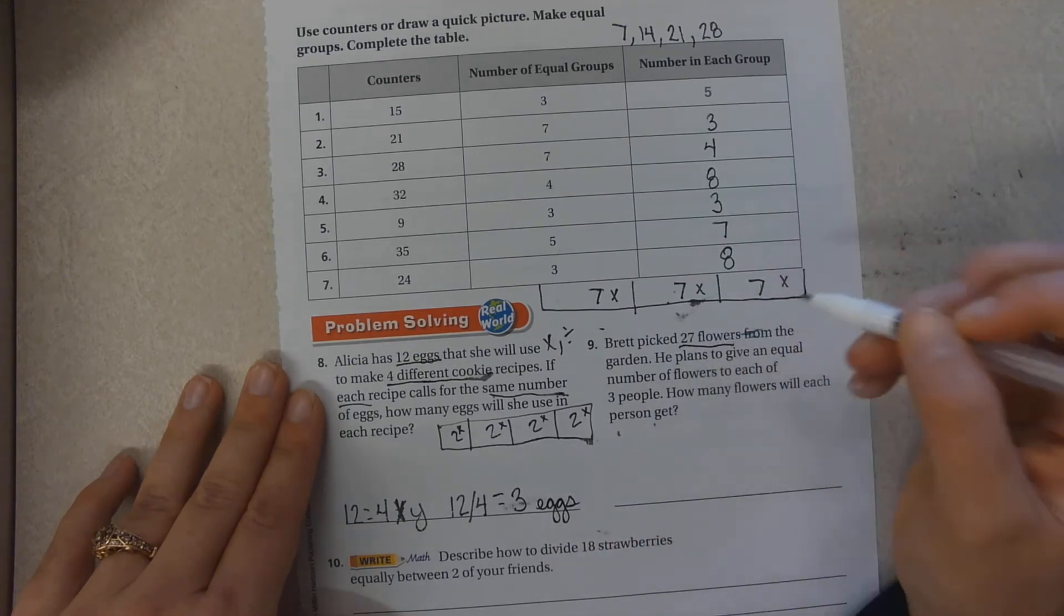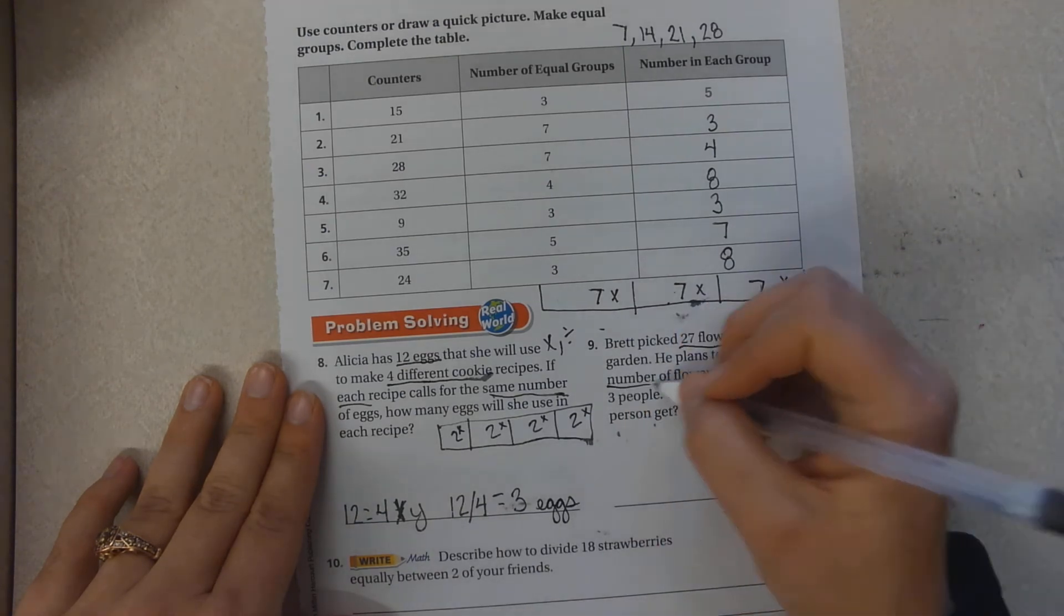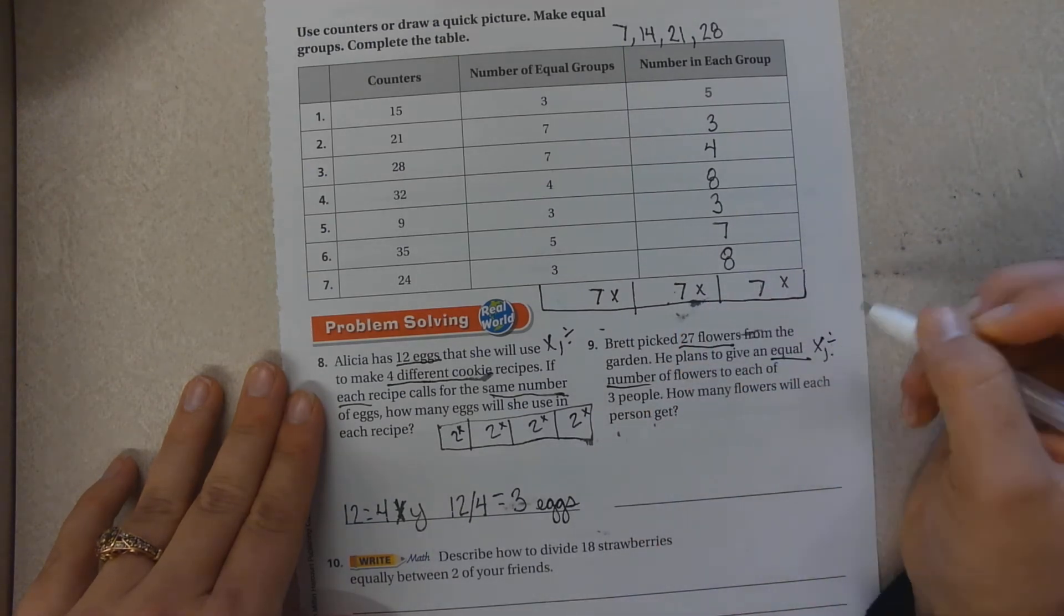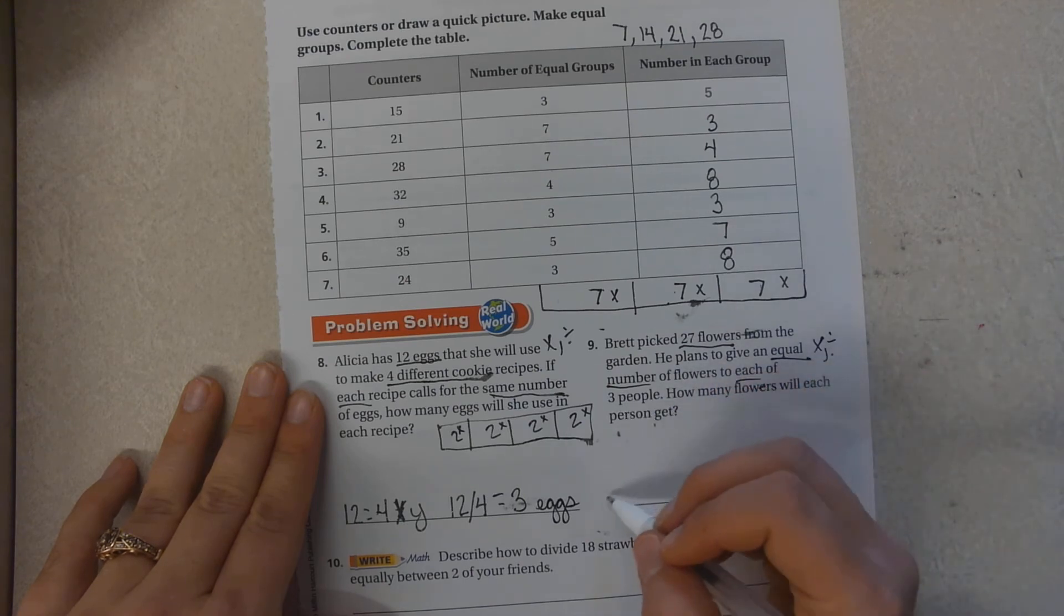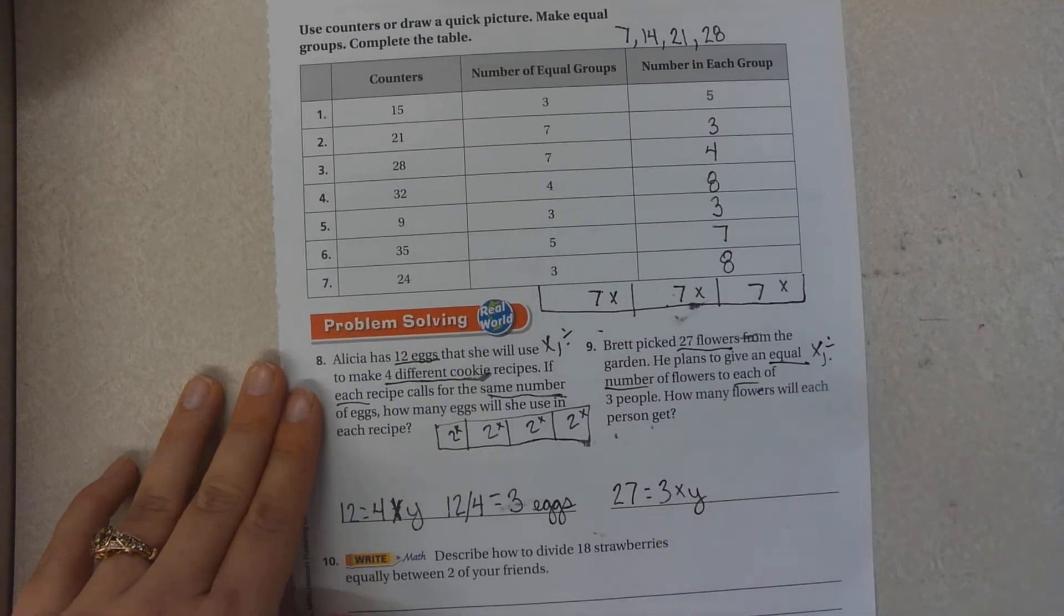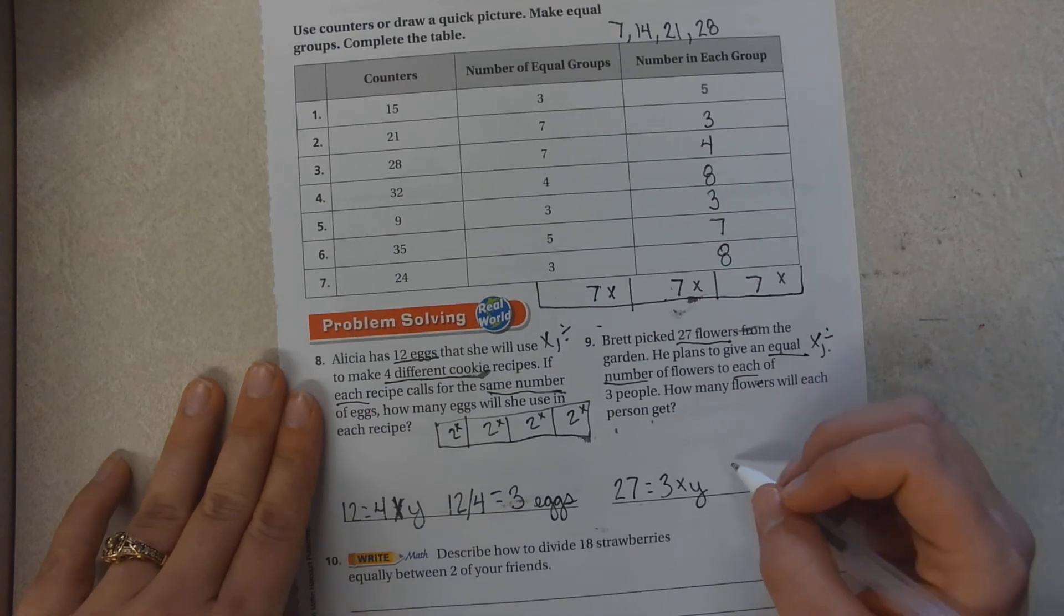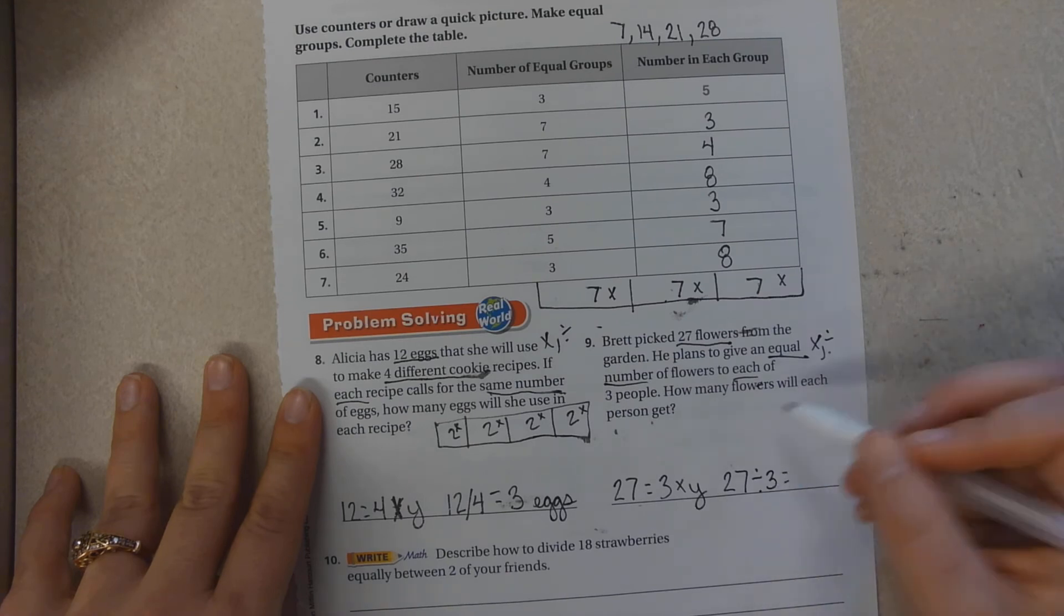Brett picked 27 flowers from the garden. He plans to give an equal number, that tells you to multiply or divide, to each of the 3 people. So you have 27, 3, an equal number. Since I have my total, I know I'm going to divide. So 27 divided by 3 equals what?